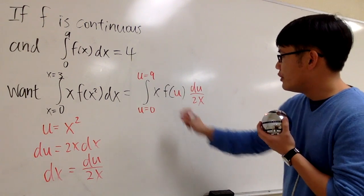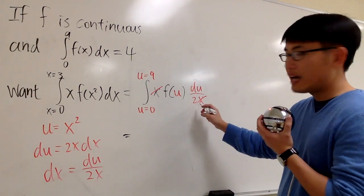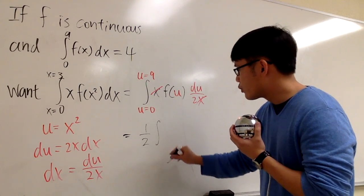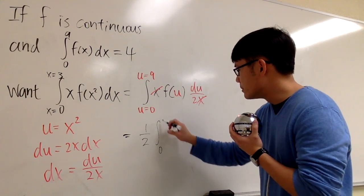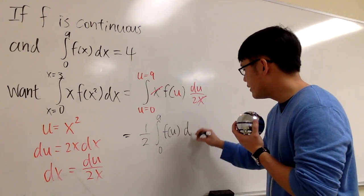Now let's see what we have. Notice this x and that x will cancel out. We have 1 half right here. Let's take that out. 1 half, and we have the integral from 0 to 9 in terms of u, and inside here we have f(u) du.